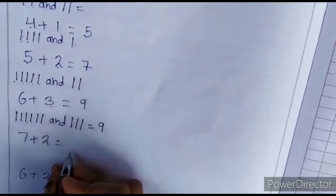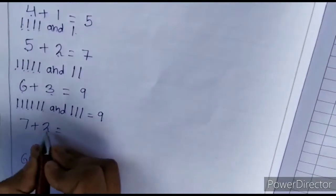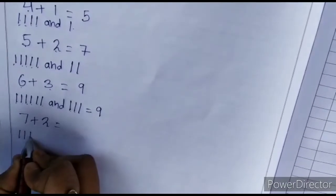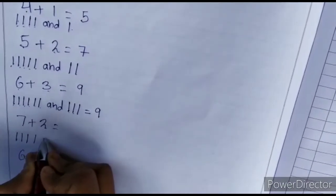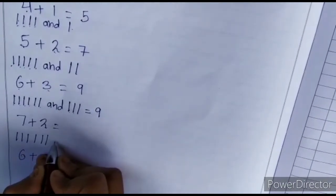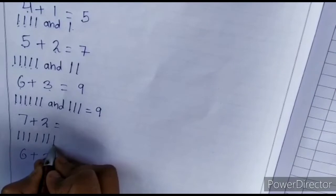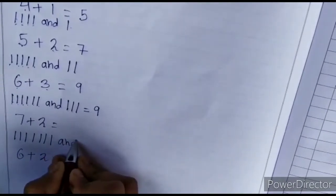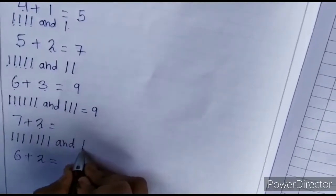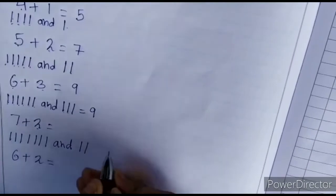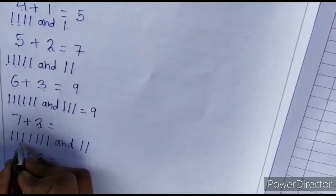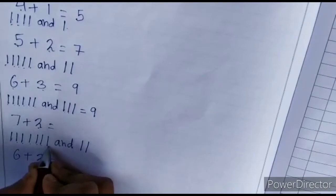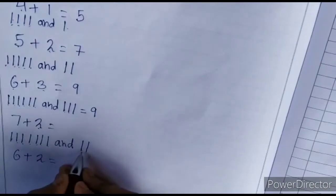6, 7. 6, 8. 9. 7 plus 2. 1, 2, 3, 4, 5, 6, 7. And 2. 1, 2. Is equals to. 1, 2, 3, 4, 5, 6, 7, 8, 9.